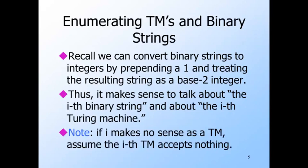A small matter is that some binary strings represent flawed Turing machines. For example, it might have a pair of double ones with other than four single ones between them. That would not represent five blocks of zeros and therefore would not represent any move of a Turing machine. However, let's assume any binary string that is flawed represents a Turing machine that accepts the empty language. Likewise, if i is the integer we get from such a string, then the i-th Turing machine accepts the empty language.